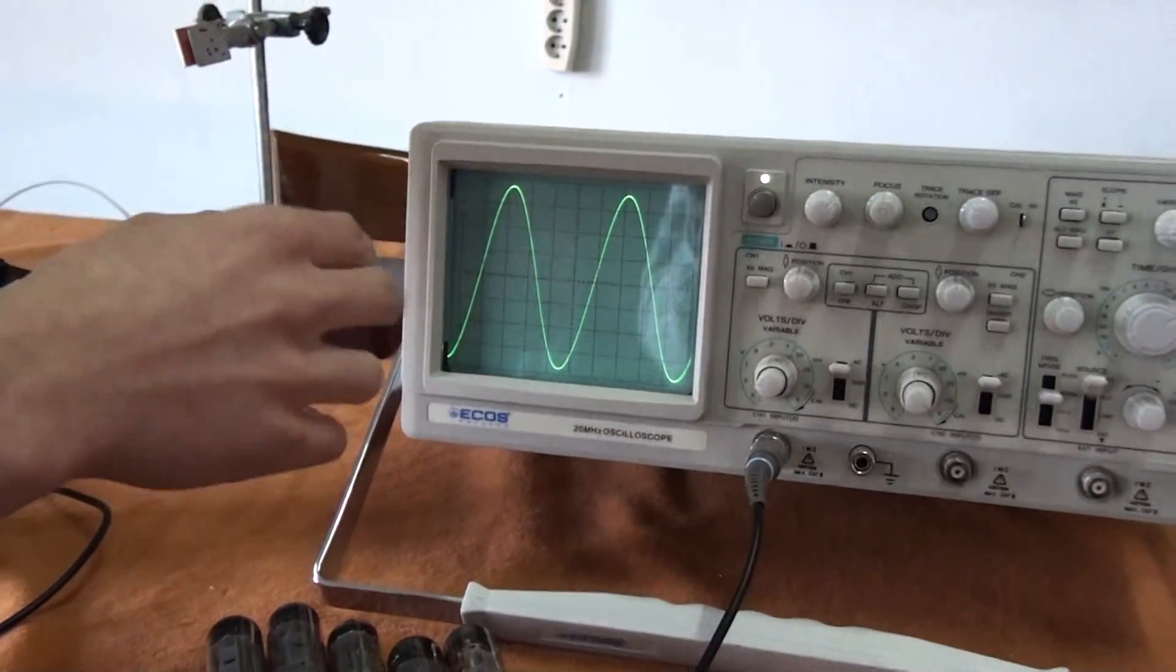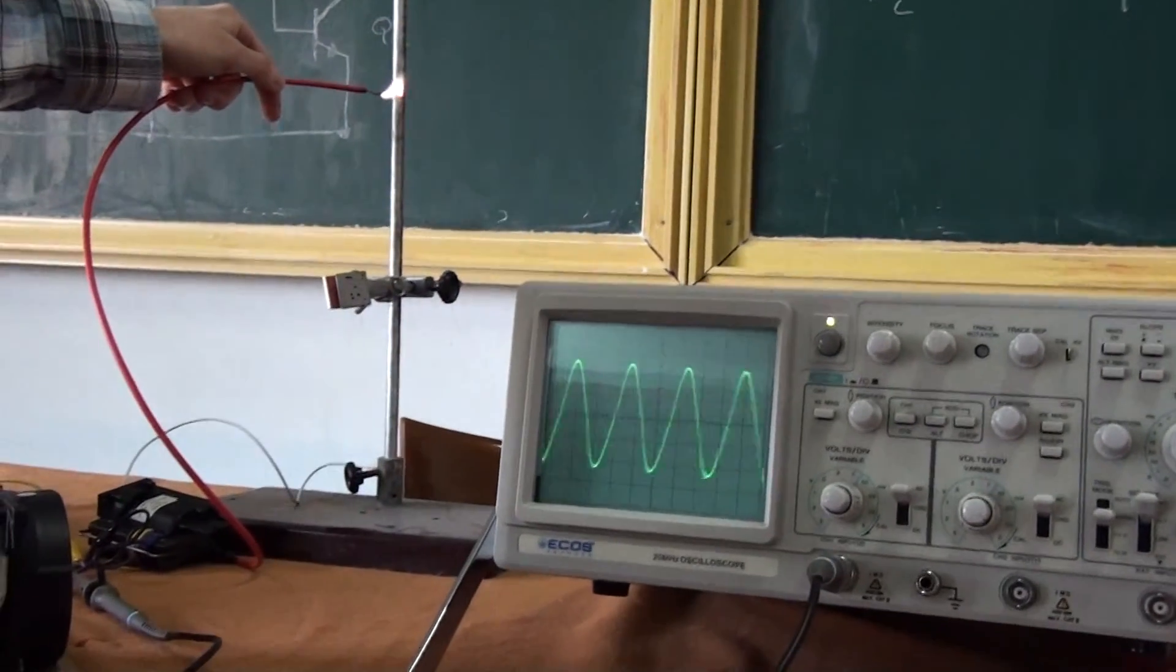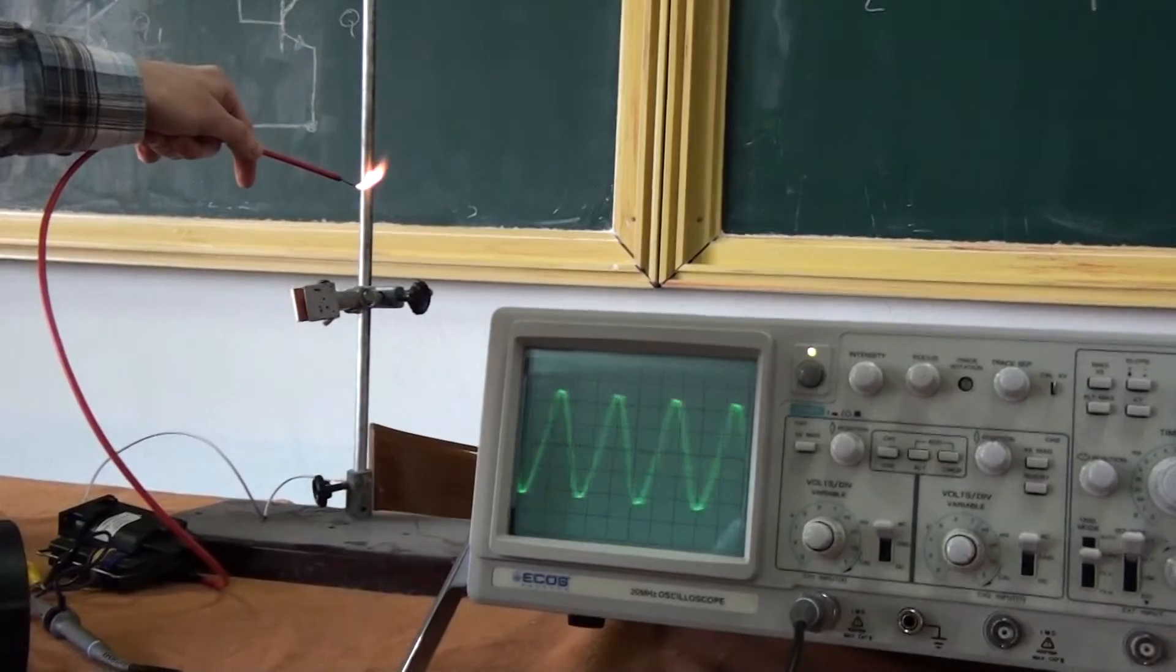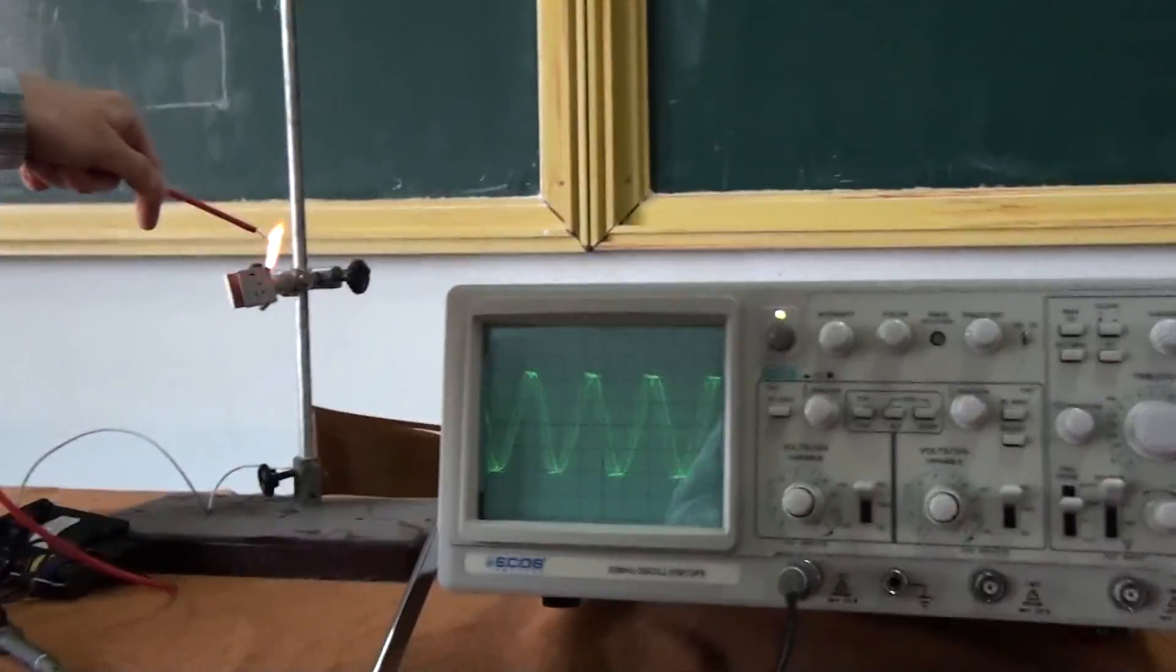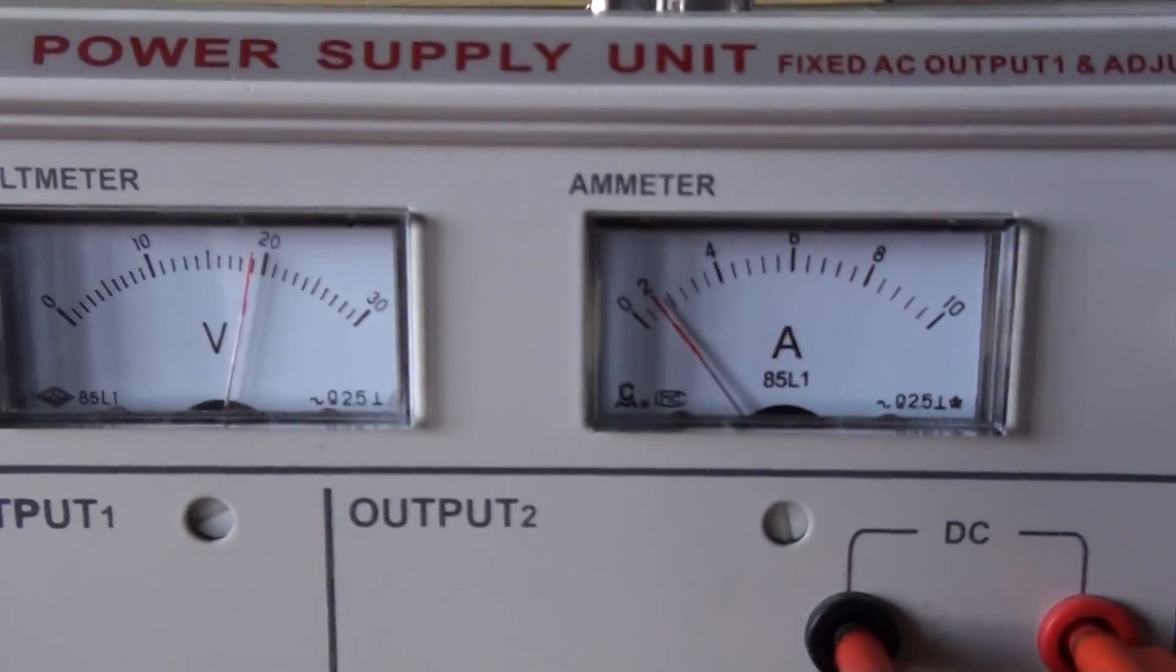Now let's see what happens when the sparks happen. He is striking an arc. And the sinusoid wobbles. And the power supply is complaining also. The power supply says that it's not liking it.